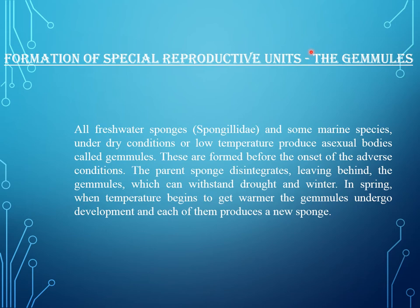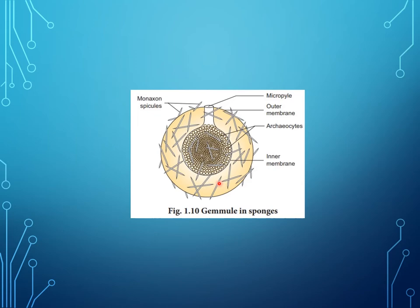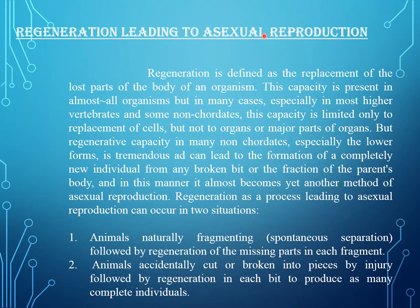Formation of special reproductive units — the gemmules. All freshwater sponges and some marine species under dry conditions or low temperature produce asexual bodies called gemmules. These are formed before the onset of adverse conditions. The parent sponge disintegrates, leaving behind the gemmules which can withstand drought and winter. In spring, when temperature begins to get warmer, the gemmules undergo development and each produces a new sponge.